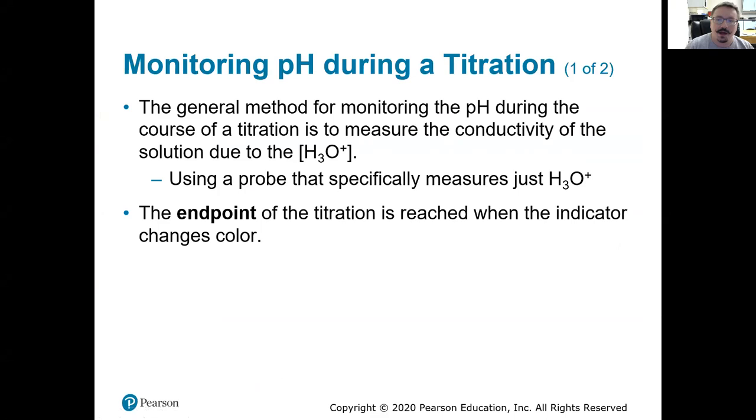We can monitor what the actual pH is. We can create a titration curve and figure out what our equivalence point is if we have a probe, something like a pH meter, or if not, we can use an indicator, look for a color change, and the color change won't technically happen at the equivalence point. It'll happen just after that at what we call the end point.